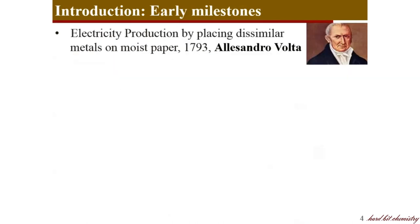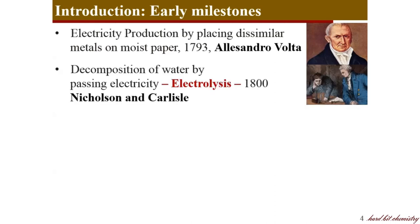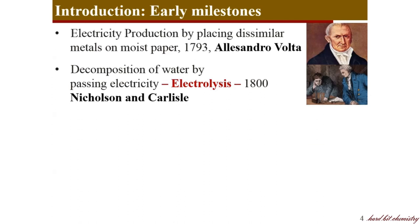Now we will see some of the earliest milestones in electrochemistry. It started in 1793 when Alessandro Volta observed that electricity is produced when two dissimilar metals are placed on a moist paper. Very soon, Nicholson and Carlisle came up with electrolysis — they observed that water can be decomposed by passing electricity through it. And Humphrey Davy in 1806 provided an explanation relating electricity and chemistry, saying there is a chemical reason behind the decomposition of water or production of electricity through electrolyte.